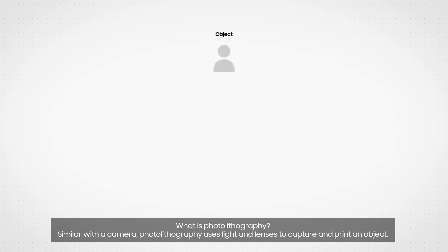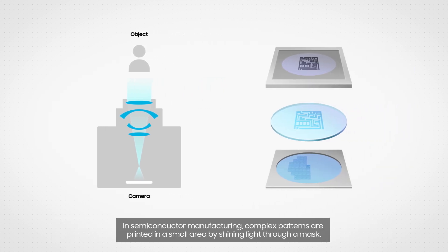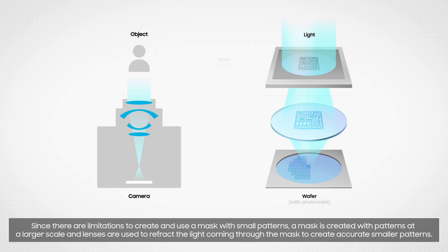We'll start with an introduction to photolithography. What is photolithography? Similar to a camera, photolithography uses light and lenses to capture and print an object. In semiconductor manufacturing, complex patterns are printed in a small area by shining light through a mask. Since there are limitations to create and use a mask with small patterns, a mask is created with patterns at a larger scale and lenses are used to refract the light coming through the mask to create accurate smaller patterns.